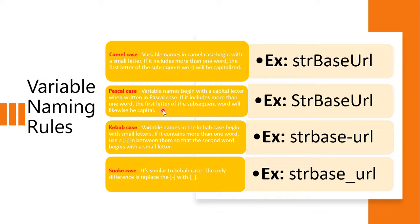Camel case begins with a small letter. If it includes more than one word, the first letter of each subsequent word is capitalized — for example, 'baseUrl'. The next one is Pascal case. Pascal case begins with a capital letter. The difference: camel case starts with a small letter; Pascal case starts with a capital letter. If there is more than one word, the first letter of each subsequent word is also capitalized, same as camel case.